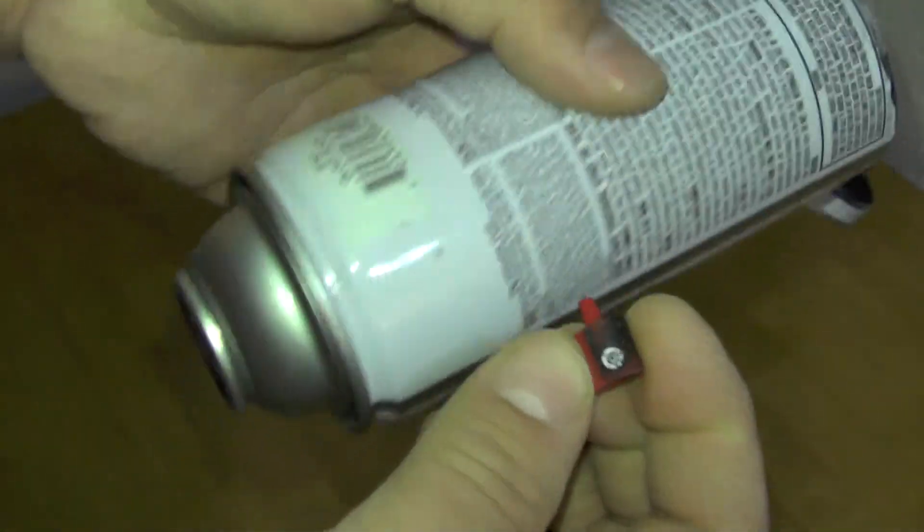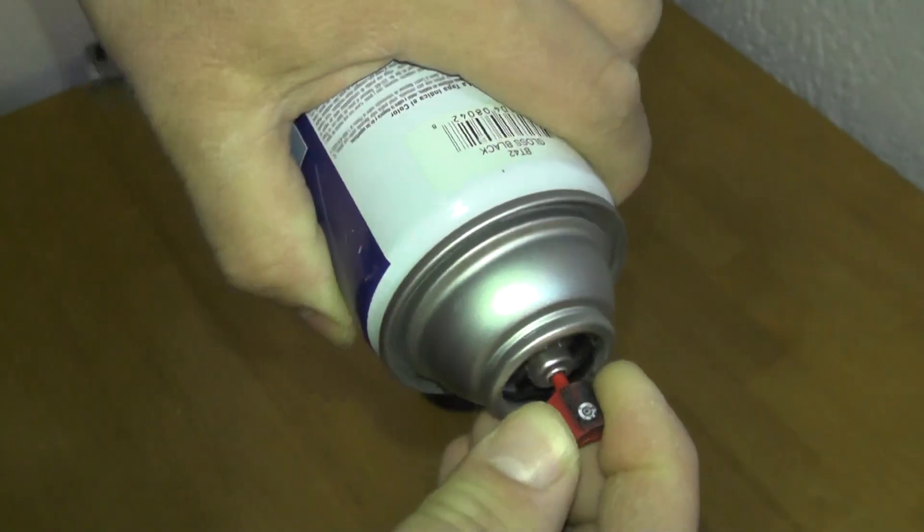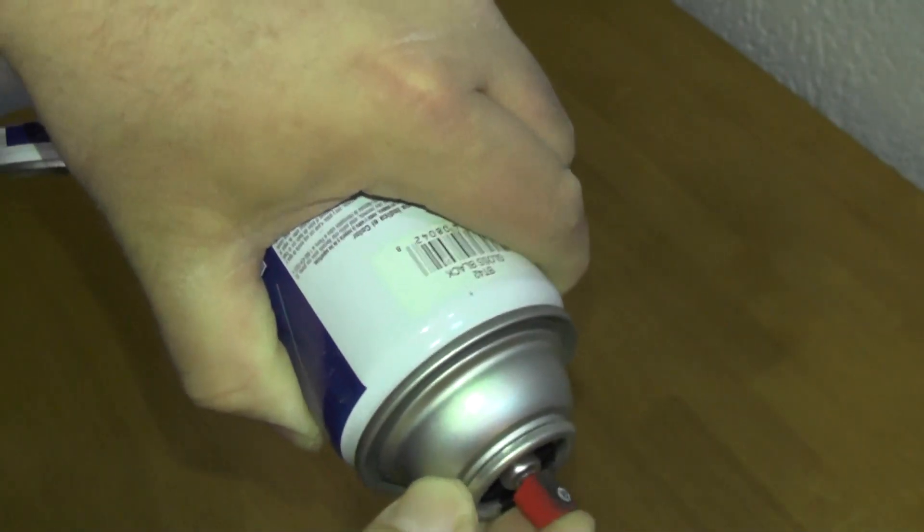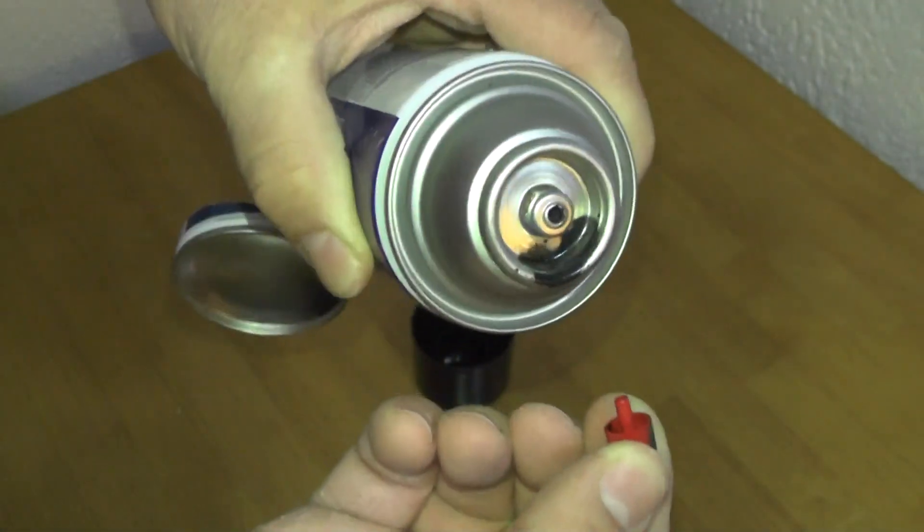And here's the nozzle itself. So just like other spray cans, the spray nozzle goes down inside the hole. You can push it in to get the paint to come out, and they just twist right off.